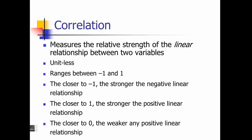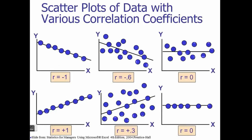Here is what we mean by linear relationship versus non-linear relationship, and the strength of relationship. In the first graph, the correlation is minus 1 — there is a strong negative relationship. The line passing through the data points between x and y is negative sloping, downward sloping. That is a perfect correlation, but it is a negative correlation.